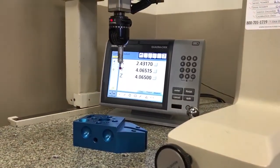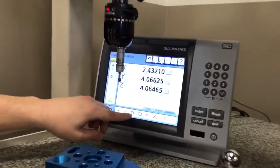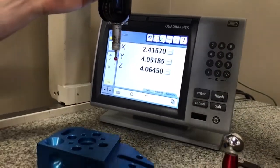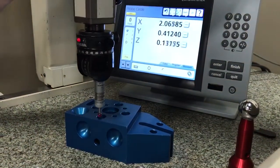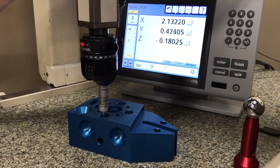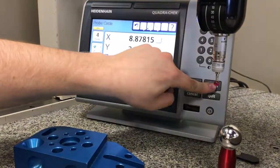Now let's measure another circle by pressing on circle again, and I'm going to measure this one right here, this bottom one, and press finish again like always.